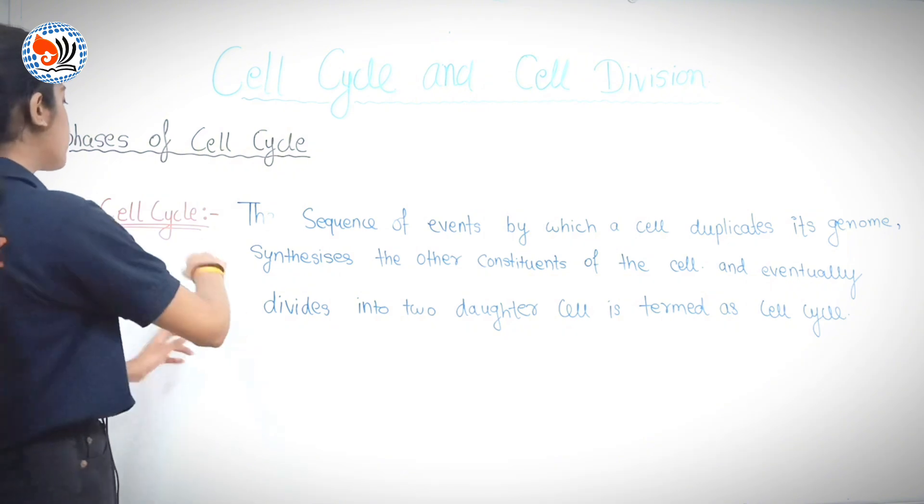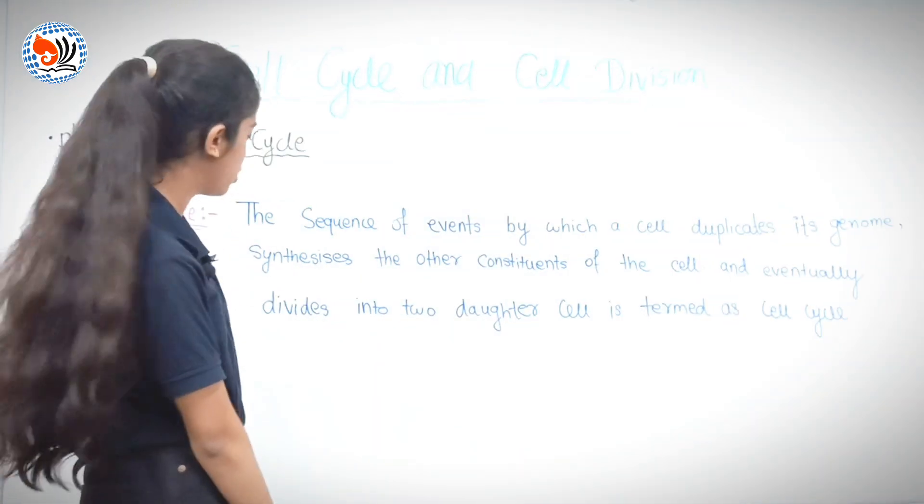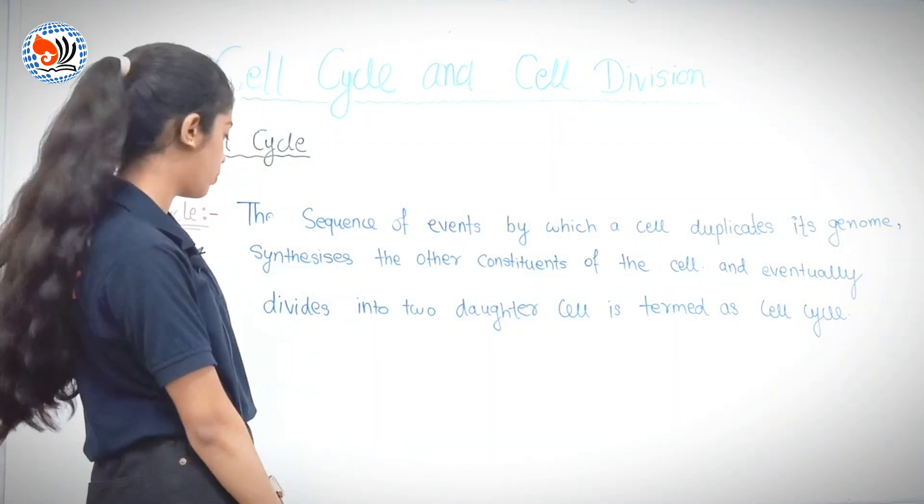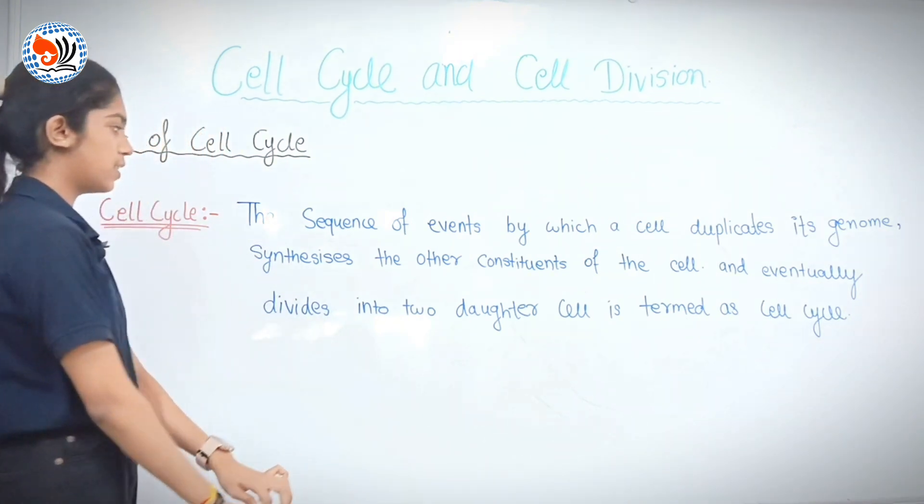Phases of cell cycle. The sequence of events by which a cell duplicates its genome, synthesizes the other constituents of the cell and eventually divides into two daughter cells is termed as cell cycle.